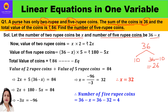Now the value of 2-rupee coins — I will multiply the number by the denomination to get the value. So the number of 2-rupee coins is x, denomination is 2 because it's a 2-rupee coin, so the total value of 2-rupee coins is 2x. Now the value of 5-rupee coins is again number multiplied by denomination which gives the value.